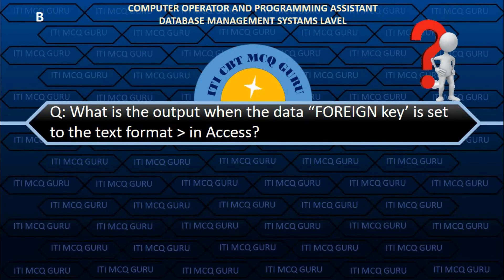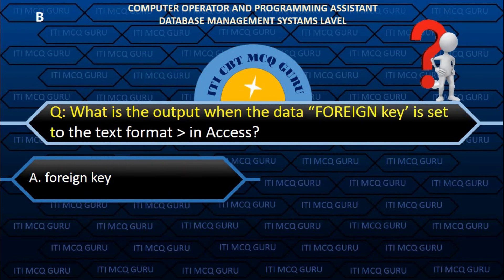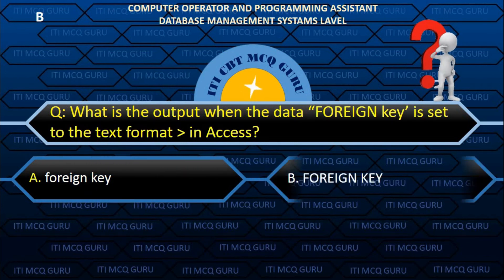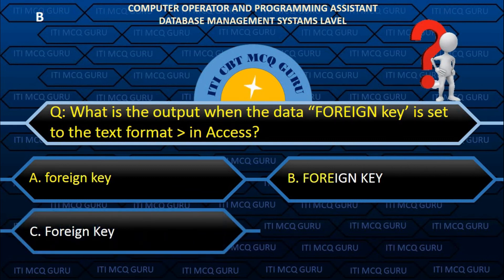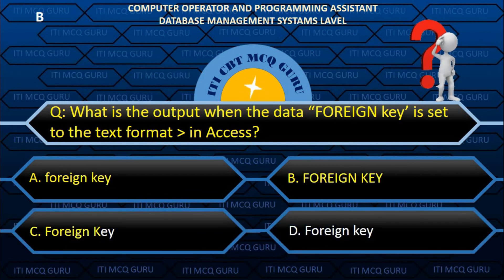What is the output when the data 'foreign key' is set to the text format 'greater' in Access? B. foreign key.